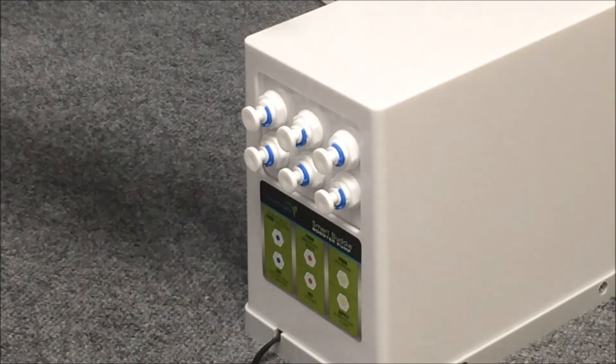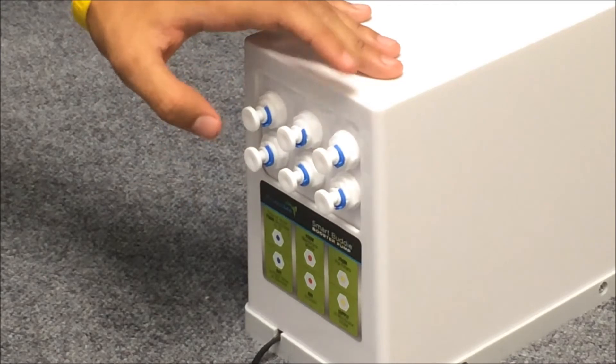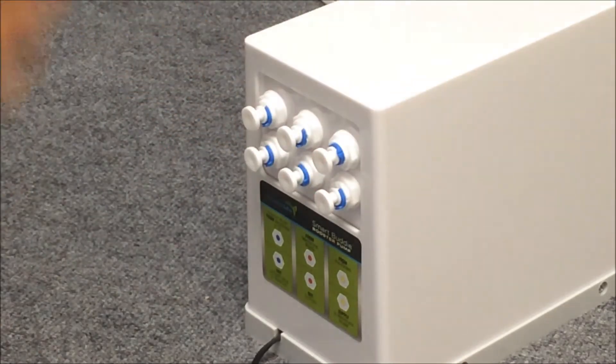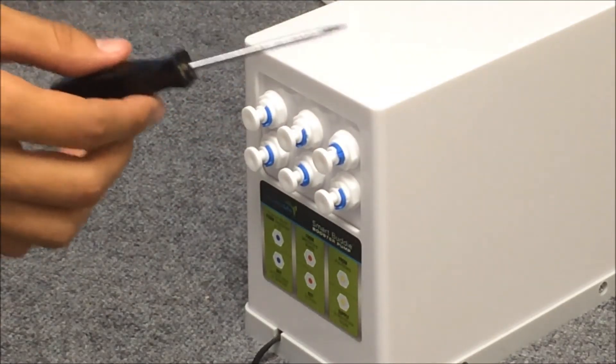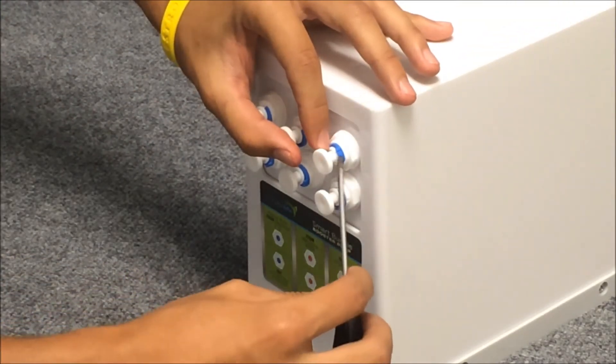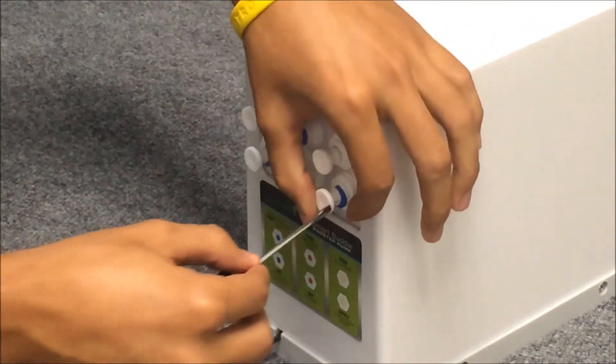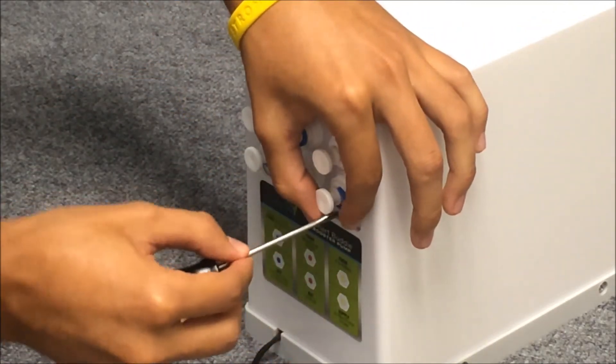Before we begin plumbing, we're going to want to remove the blue collar and the white plugs. In order to do that, you can make your life a little easier by taking a flathead screwdriver and placing it in between the blue collar and the white fitting and lifting up.